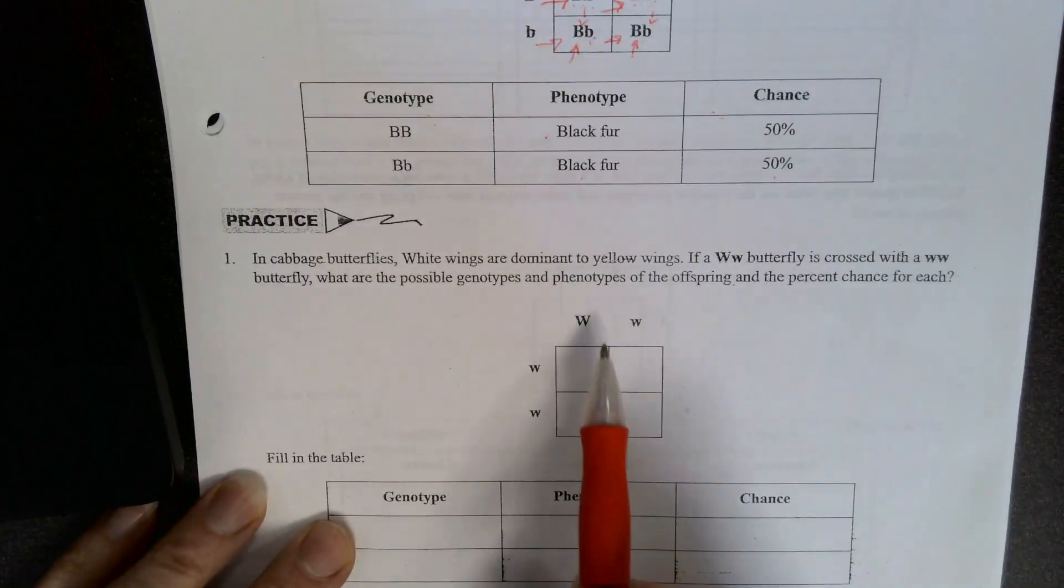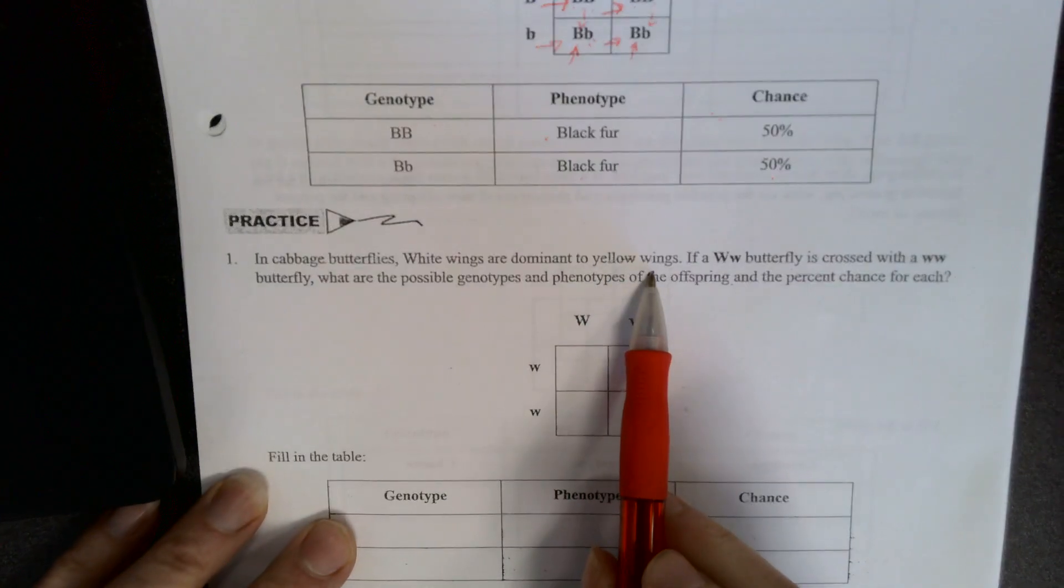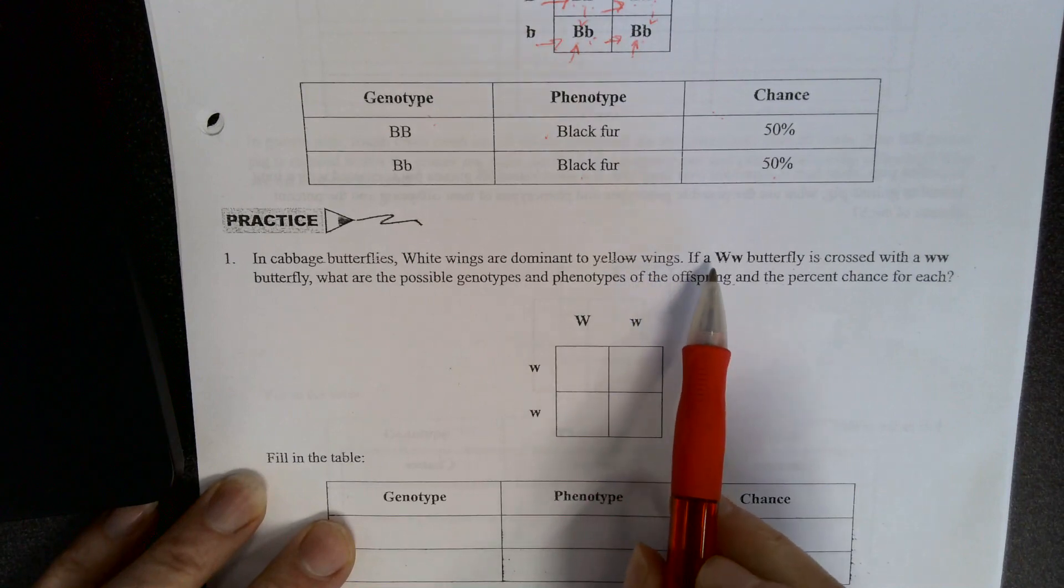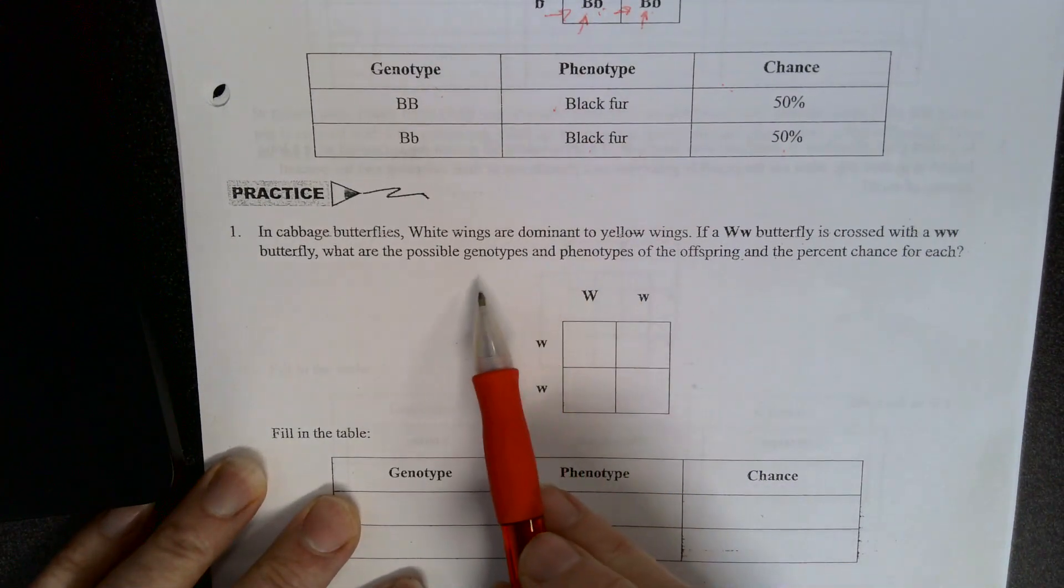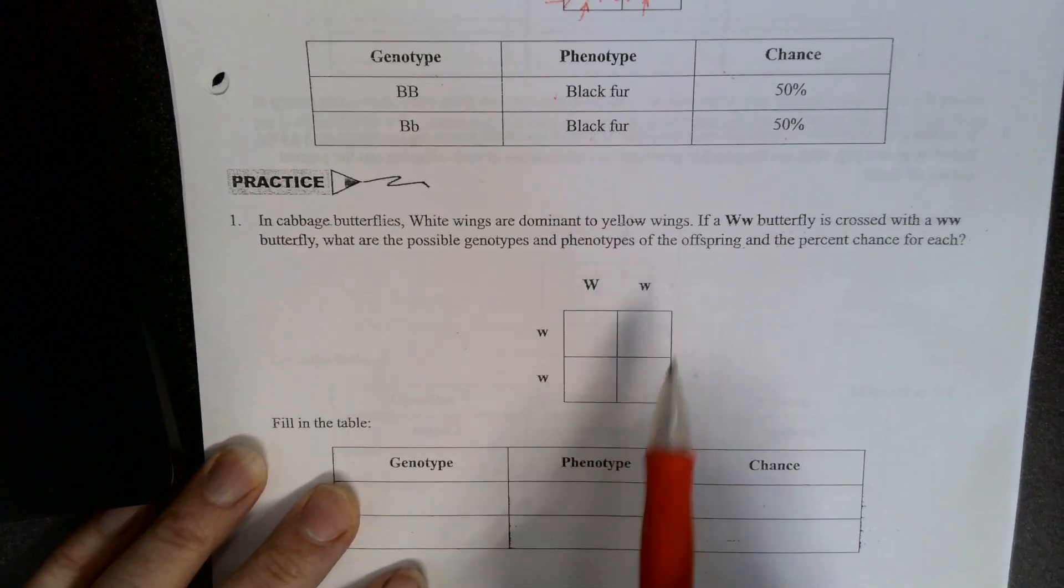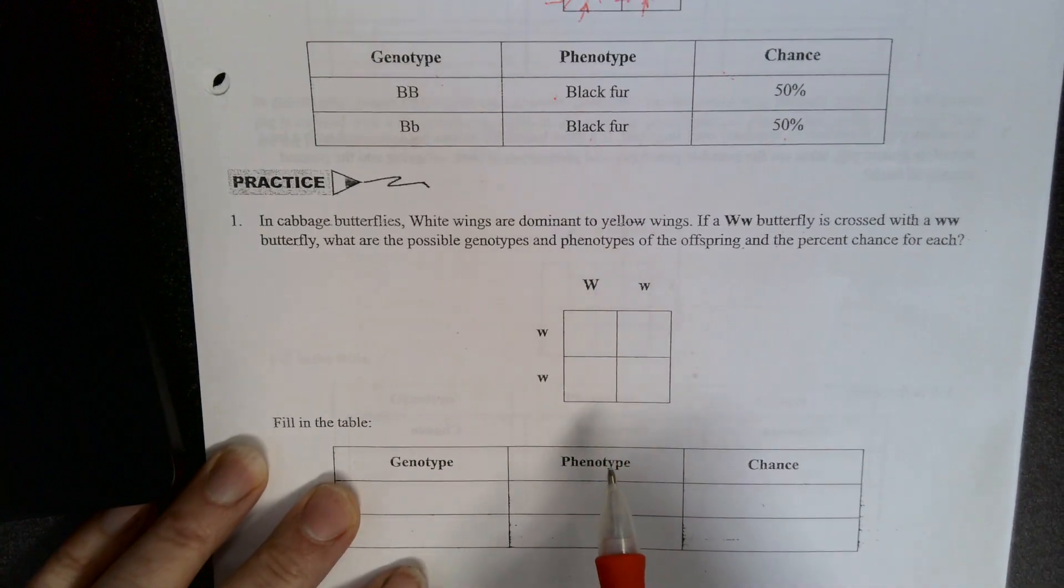So now we're going to practice one on our own. Cabbage butterflies, white wings, dominant to yellow. If big W, little W is crossed with little, little, what are the possible genotypes and phenotypes? So we have this set up. So let's first do our cross.